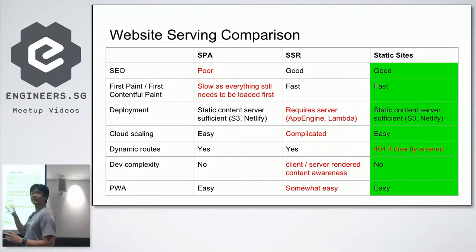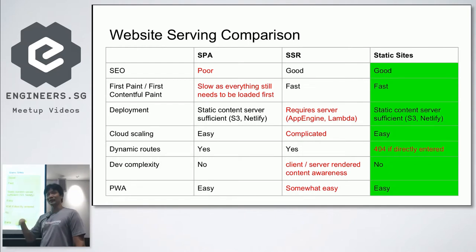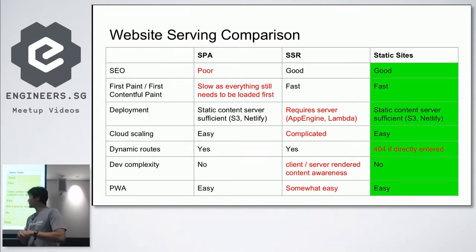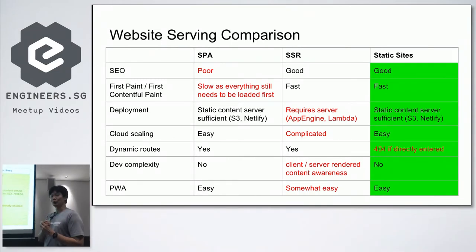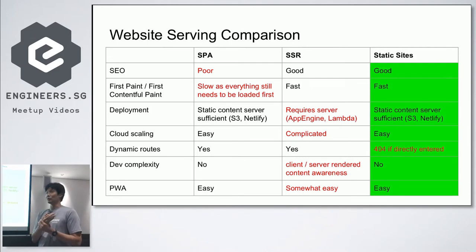What SPA does poorly, server-side rendering does well, and vice versa. The problem with SSR is that you need a server to serve those pages — you need Node/Express or App Engine or something running. If you want to scale in the cloud, you have to spin up extra VMs or containers.